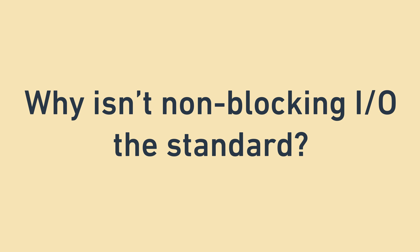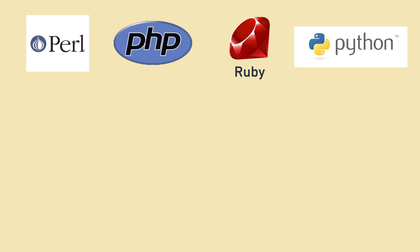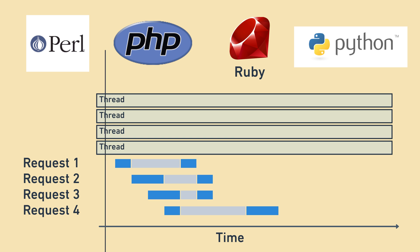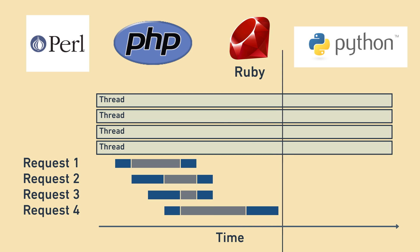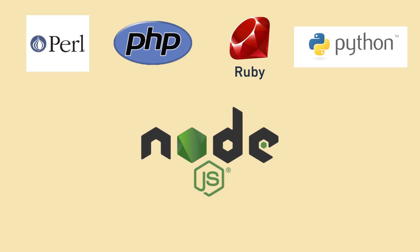You might be wondering: why isn't non-blocking IO the standard? It just seems obviously better or more efficient. Well, when web backend development first became popular in languages like Perl, PHP, and later others like Ruby, Python, etc., the language model didn't easily allow for non-blocking IO. It's possible in some of these as well as in others like Rust, Go, Java, and Scala, but depending on the language, it can sometimes be inconvenient or off the beaten path. As an alternative, folks use servers with blocking IO and lots and lots of threads to handle high traffic. Node.js was created because the creator wanted to make non-blocking IO easier to adopt, and JavaScript was a great fit because of its emphasis on callbacks.